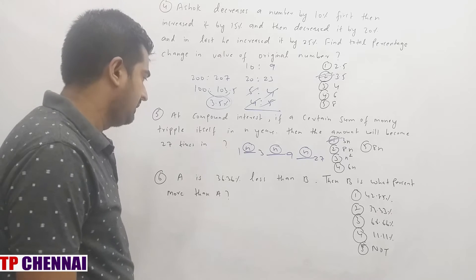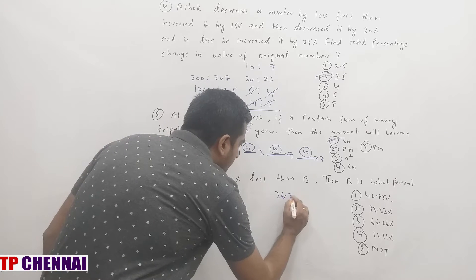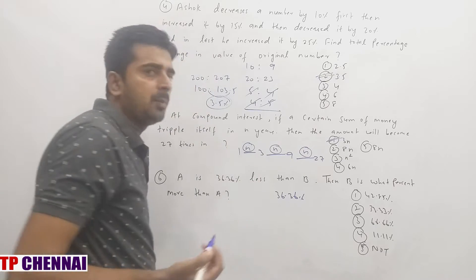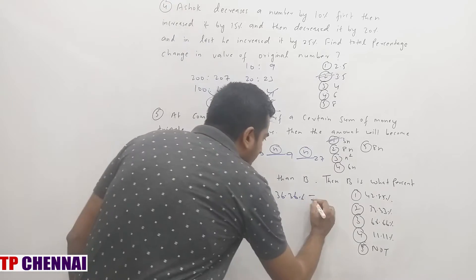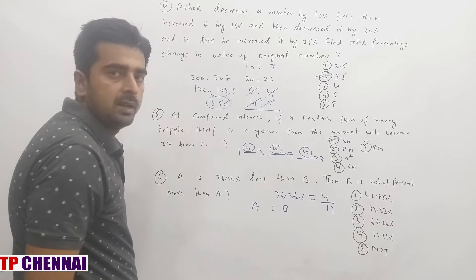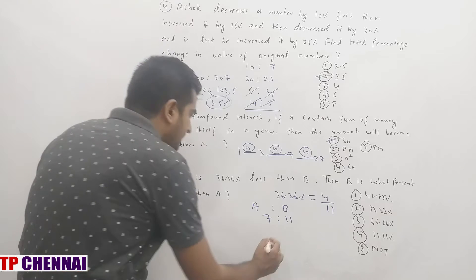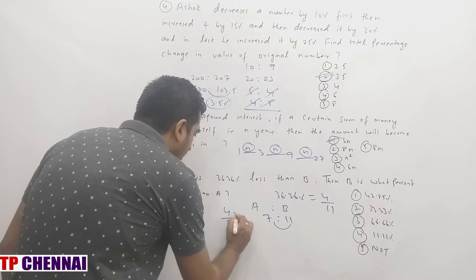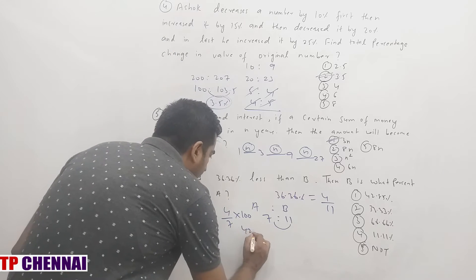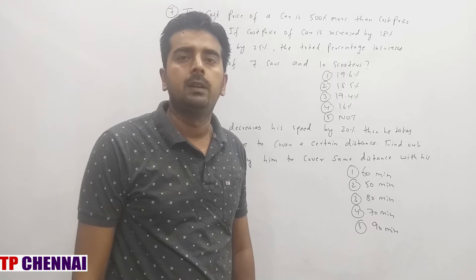Sixth question: A is 36.36% less than B. Then B is what percent more than A? 36.36% equals 4/11. If B is 11, then A is 11 minus 4 = 7. So B is how much more than A? 4/7 × 100 = 57.14%. 1/7 is 14.28, so 4/7 is approximately 57.14%, answer is the nearest option.